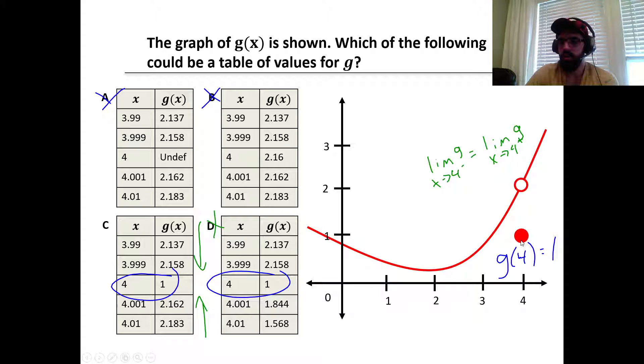4 is defined, so g(4) equals 1. Otherwise we see the limit as x approaches 4 from the left and from the right, the limit approaches 2.